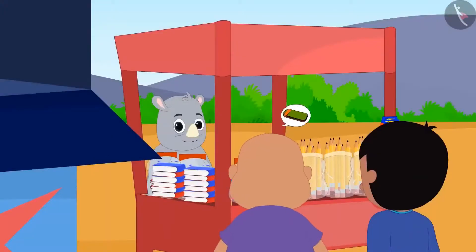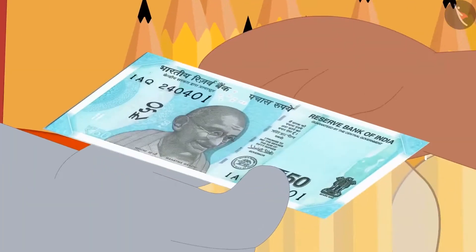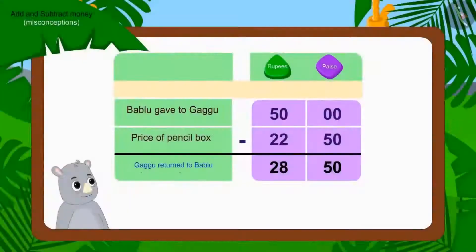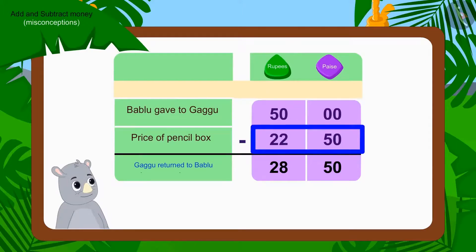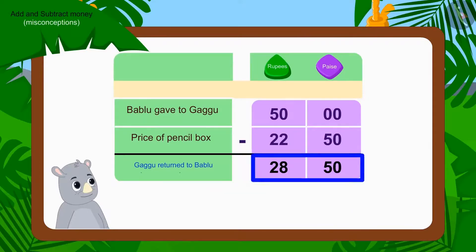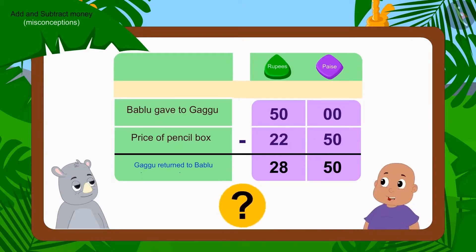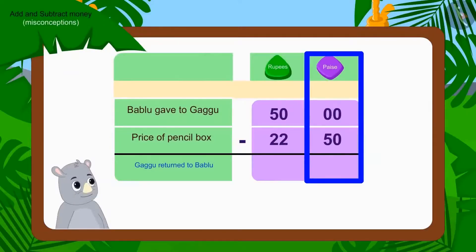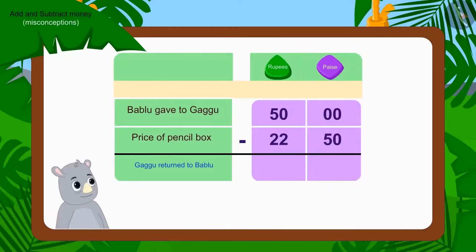Now, Bablu asked for one pencil box from Gaggu and gave a 50 rupee note to Gaggu. Gaggu deducted 22 rupees 50 paise of the pencil box from Rs. 50 and returned 28 rupees 50 paise. Children, has Gaggu returned the right amount to Bablu? Let's see. First, we will subtract the numbers written in paise. Can we deduct 50 paise out of 0 paise? No.